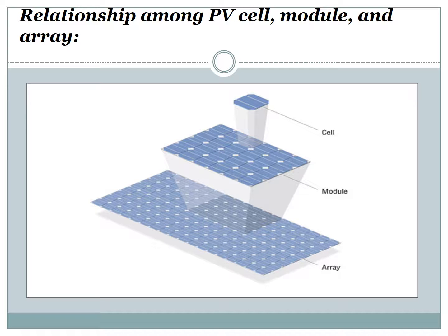Regarding the relationship among photovoltaic cell, module, and array: photovoltaic cells are the basic building blocks in the construction of a photovoltaic power system. The amount of power delivered by a single photovoltaic cell is limited to a few watts due to surface area limitations, which is not enough to reach hundreds of watts. Therefore, photovoltaic cells are connected in series or parallel to form a photovoltaic module. Similarly, a group of photovoltaic modules can be linked in series, parallel, or both to produce a desired current and voltage — this is called a photovoltaic array, whose power range extends from kilowatts to megawatts.